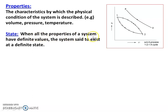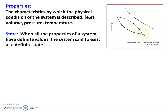State: when all the properties of the system have a definite value, the system is said to exist in a definite state. In the P-V diagram, I have point A, point B, point 1, point 2. Point A: pressure is P-A, volume is V-A. Point B: pressure is P-B, volume is V-B. Point 1: pressure is P-1, volume is V-1. Point 2: pressure is P-2, volume is V-2. When the property takes a definite value, the system is said to exist in a definite state — state 1, state 2, state A, state B.